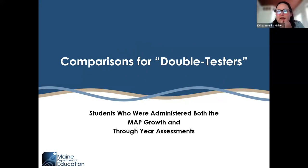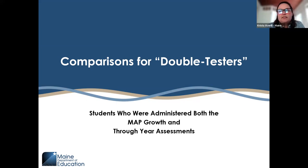We're going to be looking at three different areas today. The first will be comparisons for our double testers — those students who took both the MAP Growth and the Three-Year Assessments. We'll also be looking at comparisons of growth from fall to spring over two academic years, and then next steps the department will be taking moving forward.